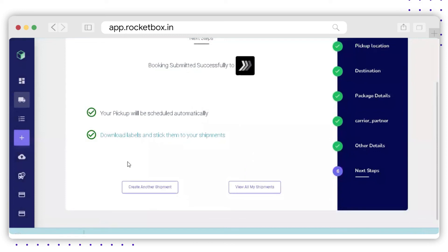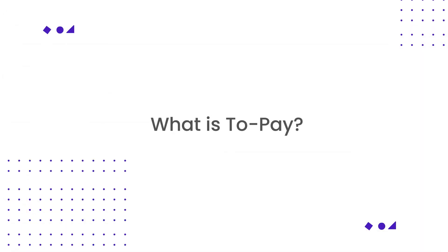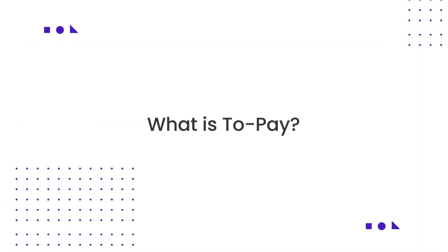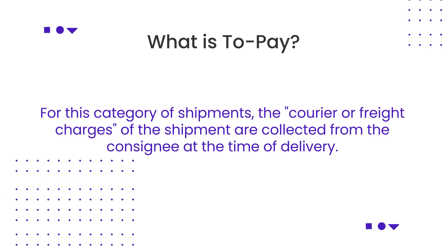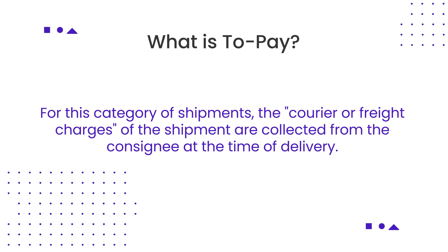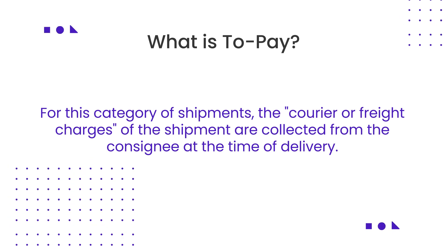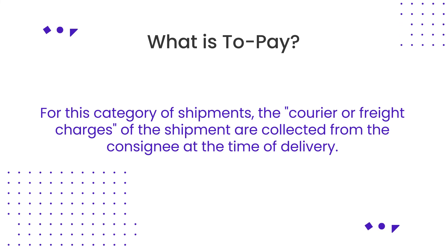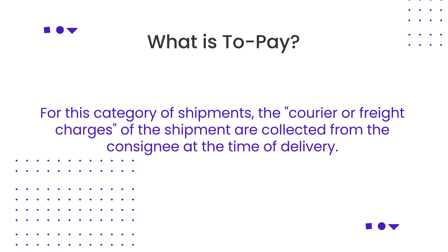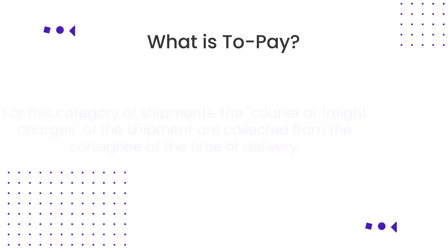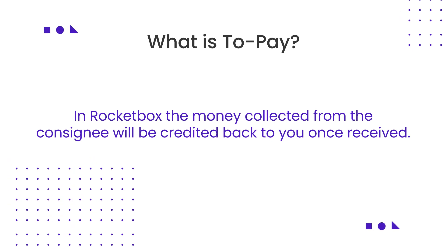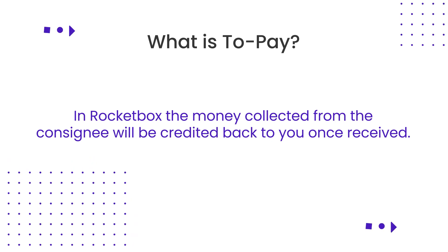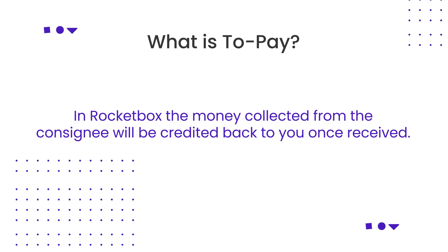What is To Pay? For this category of shipments, the courier or freight charges are collected from the consignee at the time of delivery. In Rocketbox, the money collected from the consignee will be credited back to you once received.